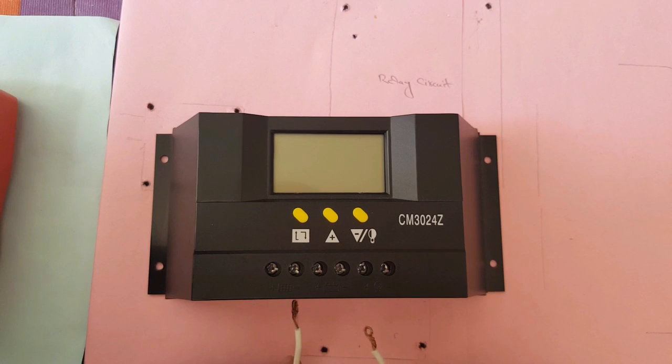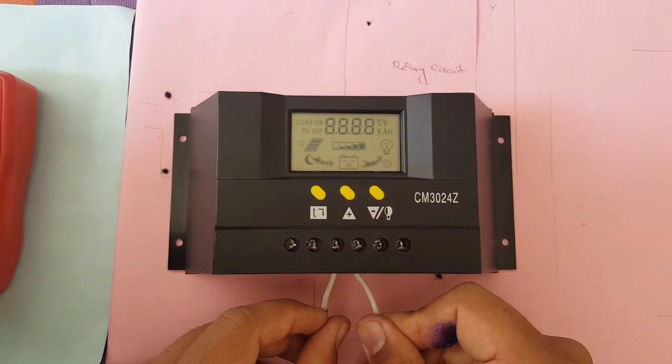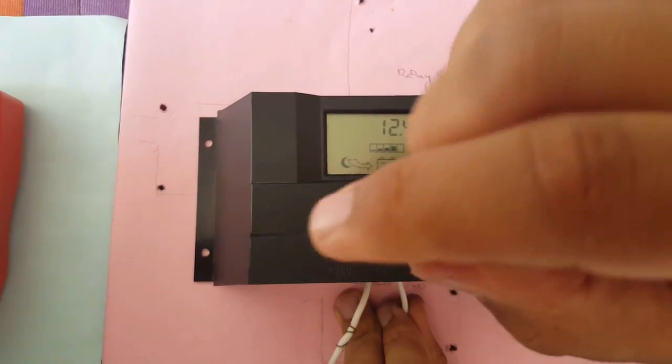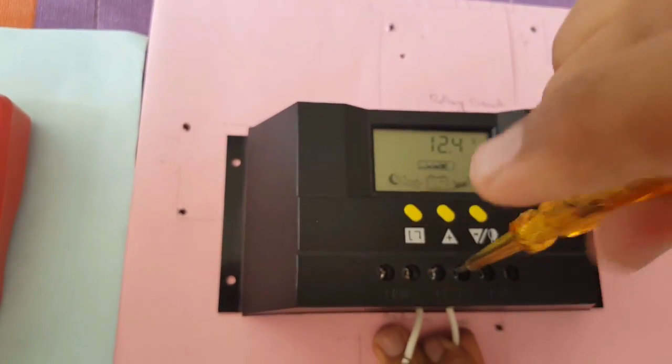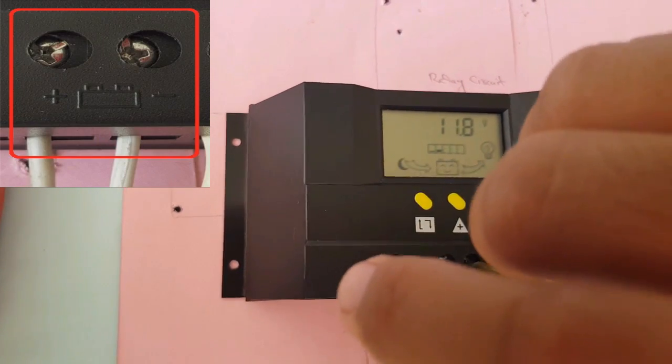Okay, now come to the connection. To connect the solar charge controller to your setup is very easy. First of all we are connecting the battery to the solar charge controller. As you can see on the front sides of the device, 6 holes with screw on it.